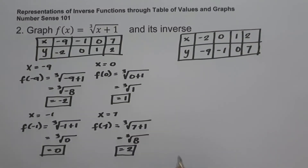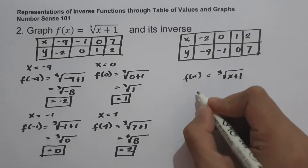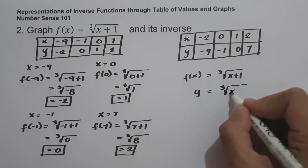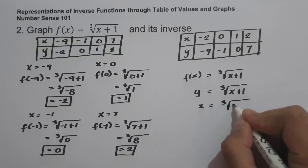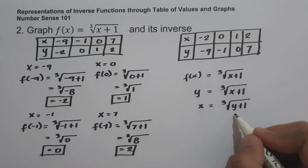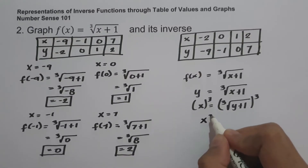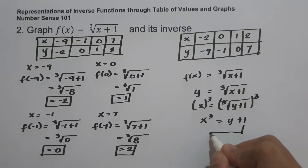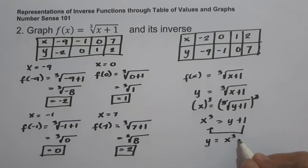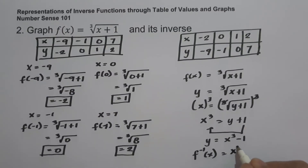To find the inverse algebraically, start with f of x equals the cube root of x plus 1, rewrite as y equals the cube root of x plus 1, then interchange x and y to get x equals the cube root of y plus 1. Cube both sides of the equation to get x cubed equals y plus 1. Move 1 to the other side to get y equals x cubed minus 1. So the inverse of the cube root of x plus 1 is x cubed minus 1.